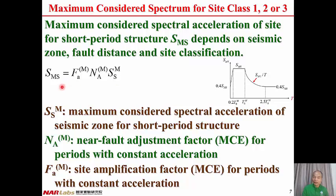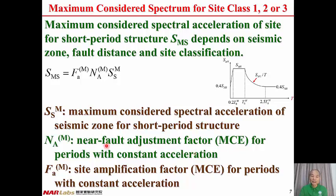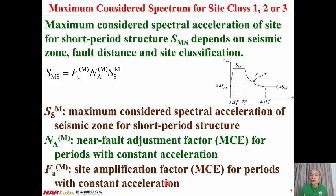SMS can be obtained by the multiplication of three factors. The first factor, SSM, is the maximum considered spectral acceleration of seismic zone for short period structure, and depends on the location of the site. The second factor, NA(M), is the near-fault adjustment factor for maximum considered earthquake for periods with constant acceleration, and depends on the fault distance — the distance of the site away from the fault. The third factor, FA(M), is the site amplification factor for maximum considered earthquake for periods with constant acceleration, and depends on site classification: site class 1, 2, or 3. By multiplying these three factors, we obtain SMS.